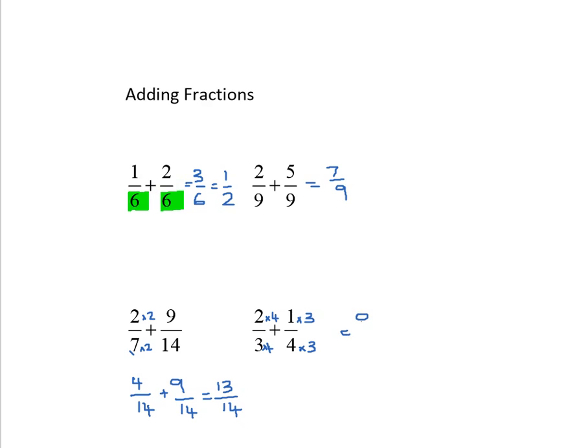So I end up with 8 over 12 because I multiply this fraction by 4, and I end up with 3 over 12 because I multiply the second fraction by 3, and I get 11/12.